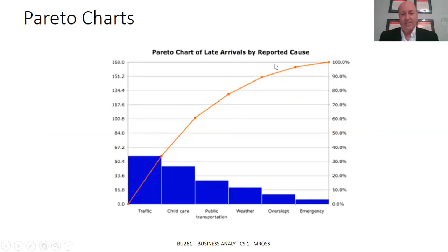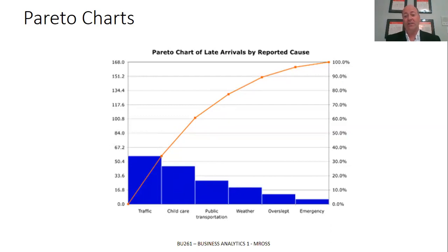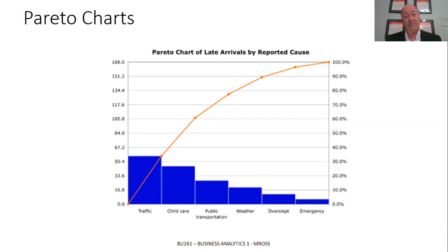This may be a chart you've seen or heard of before — this idea of a Pareto chart. If you've ever worked in quality control or tried to understand the root cause of a failure in a quality situation, you may have heard of Pareto charts. Basically, a Pareto chart is trying to understand what is the particular element or factor in the entire distribution that tends to dominate that distribution.